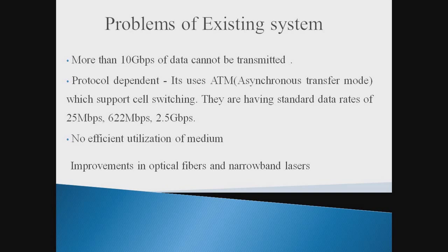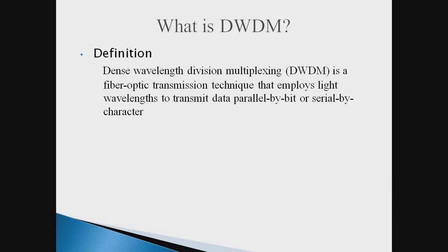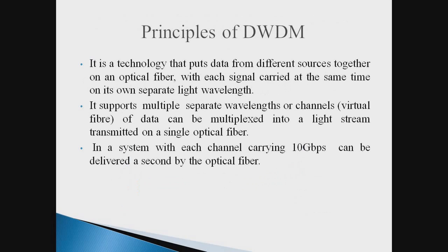This led to the birth of DWDM, which is Dense Wavelength Division Multiplexing. The concept of DWDM is to connect the transmitter and receiver with a high speed and wide highway path of bandwidth of optical cable. It supports 10 Gbps of data in a virtual fiber channel. DWDM is a technology that puts data from different sources together in an optical fiber, with each signal carried at the same time on its separate light wave.